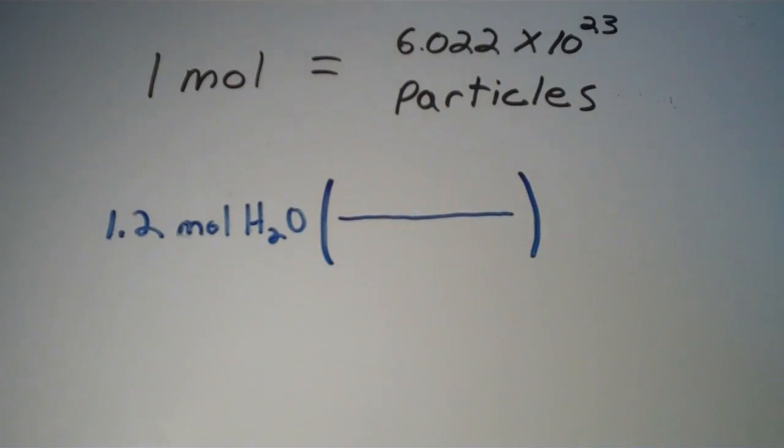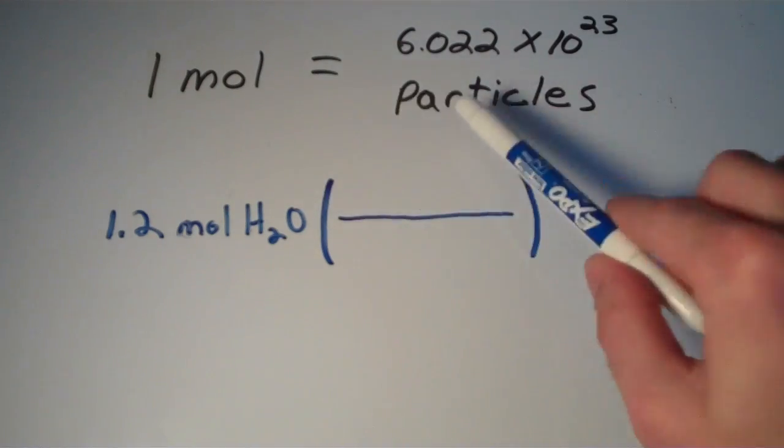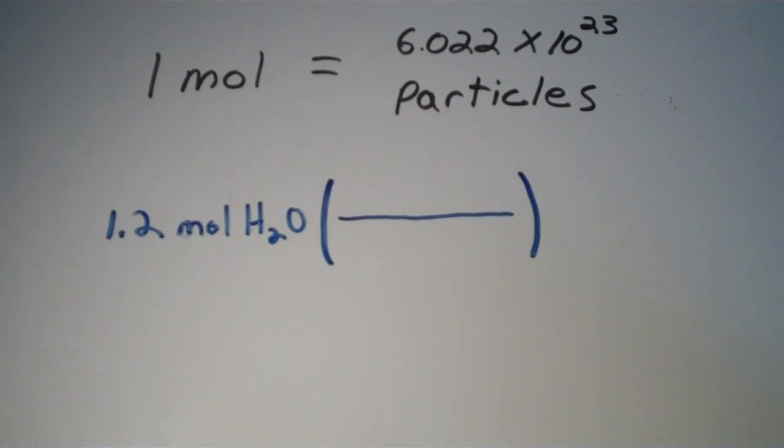And I'm going to use this relationship above: 1 mole equals 6.022 times 10 to the 23rd particles, in order to carry out this conversion. So since these two quantities are equivalent, they can be used as a conversion factor. And if you need a refresher on conversion factors, I do have a video for that.